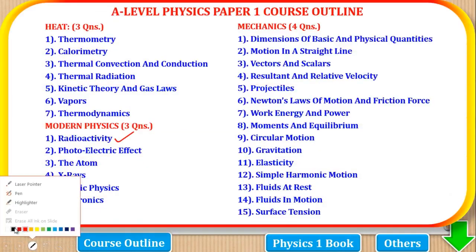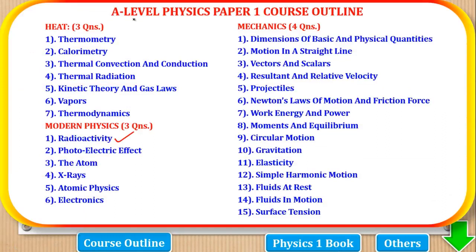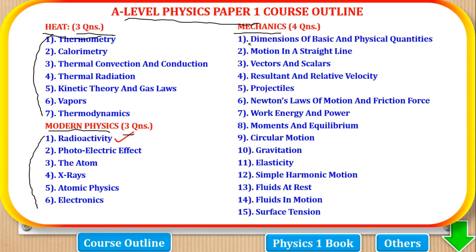Before we proceed, let's first look at the course outline for this paper. Physics paper 1 is divided into three parts: the first part is Heat, where three questions come from these topics; the second part is Modern Physics, where three questions come from these topics; and the third part is Mechanics, where four questions come from these topics. In this video, we're going to concentrate on the topic of radioactivity.